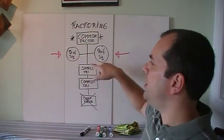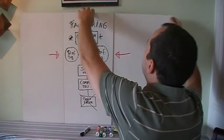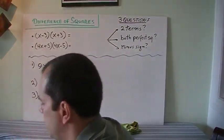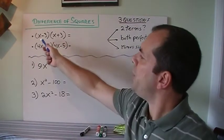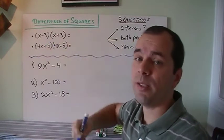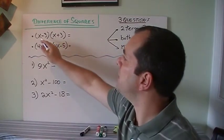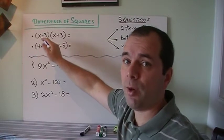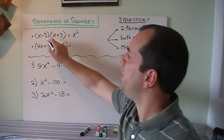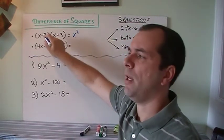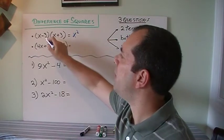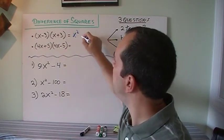Let's look at difference of squares and perfect squares. Starting with difference of squares: when you have two brackets that look the same but one has a plus and one has a minus, something interesting happens. Expanding (x+3)(x-3): x times x gives x squared, then minus 3x plus 3x — the middle term disappears — and minus 3 times 3 gives minus 9.